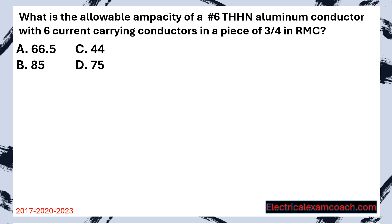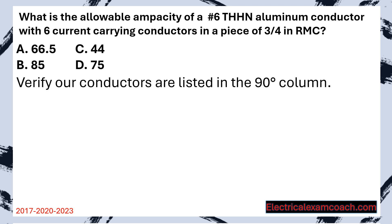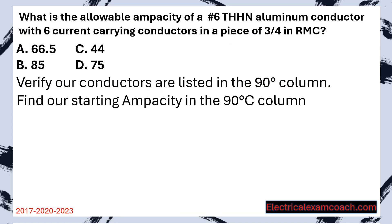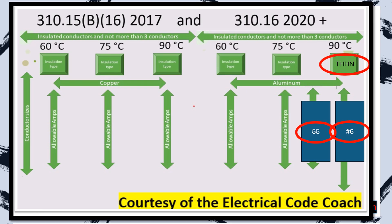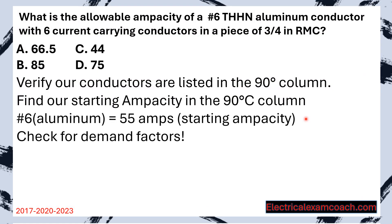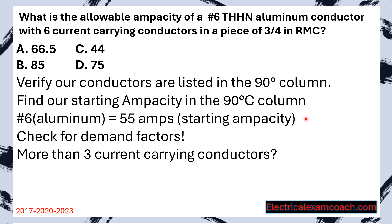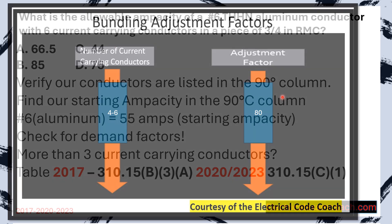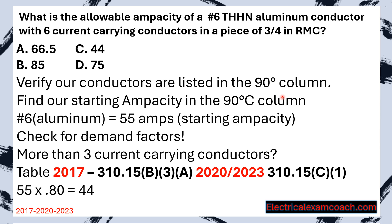Practice question: What is the allowable ampacity of a number 6 THHN aluminum conductor with six current carrying conductors in a piece of three-quarter-inch EMT? Step one: verify THHN is listed in the 90°C column on the aluminum side — it is. Step two: on the aluminum primary ampacity table, find number 6 and cross to the 90°C column — starting ampacity is 55 amps. Step three: more than three current carrying conductors, so head to the bundling adjustment factor table. Taking 55 amps multiplied by 0.80 gives a new reduced allowable ampacity of 44 amps.